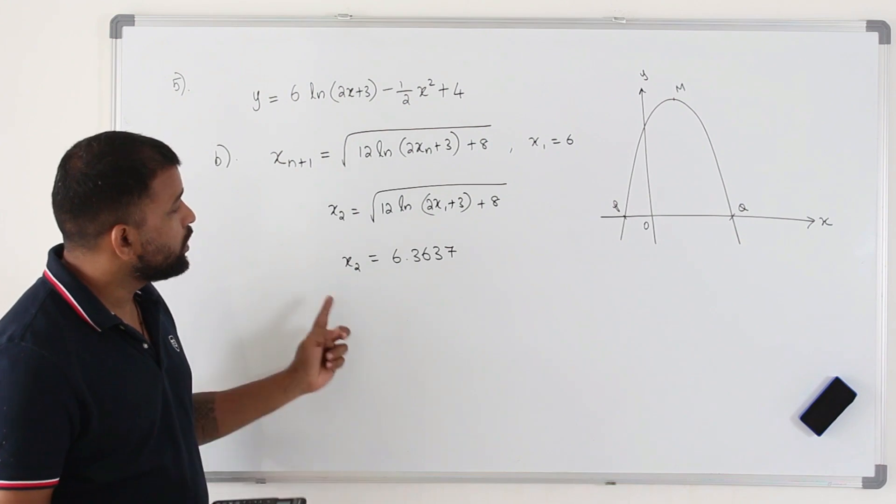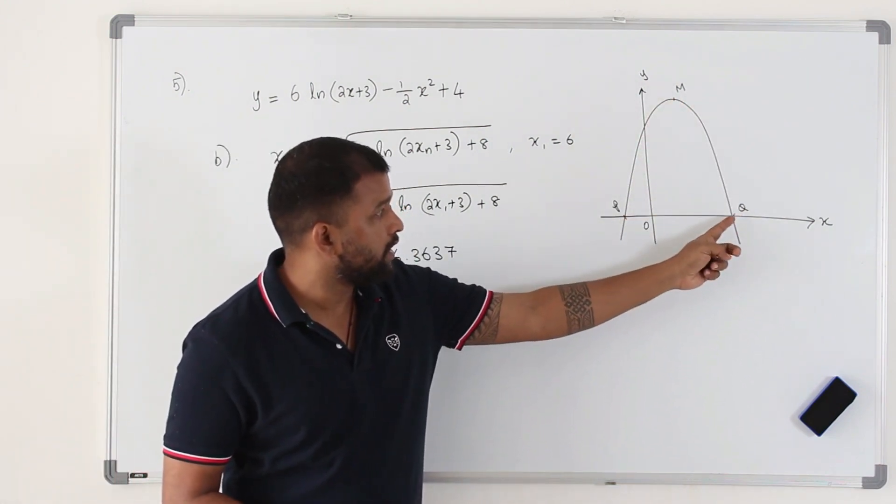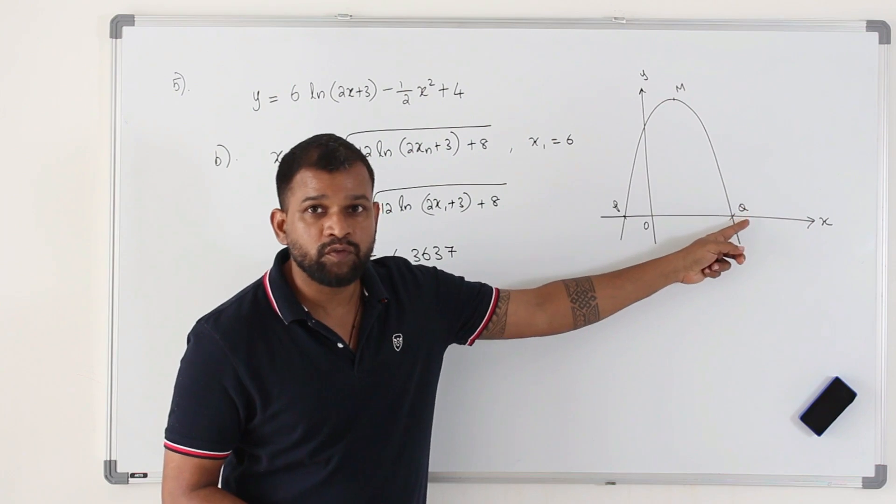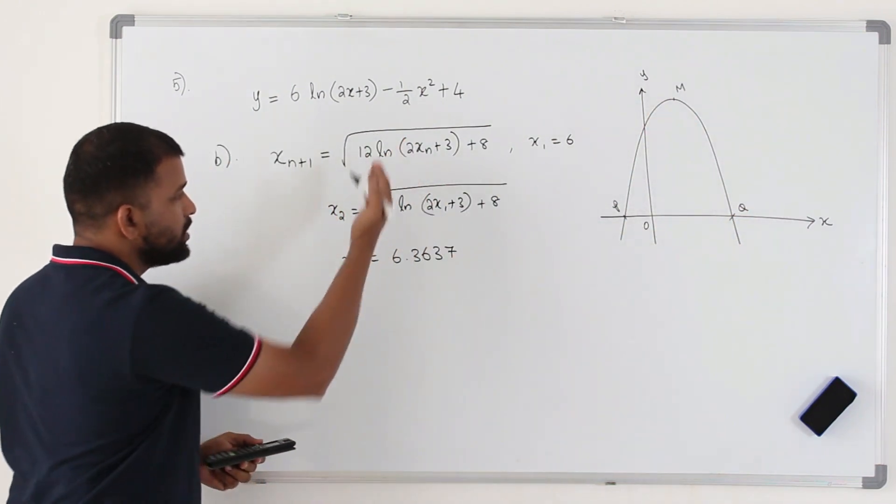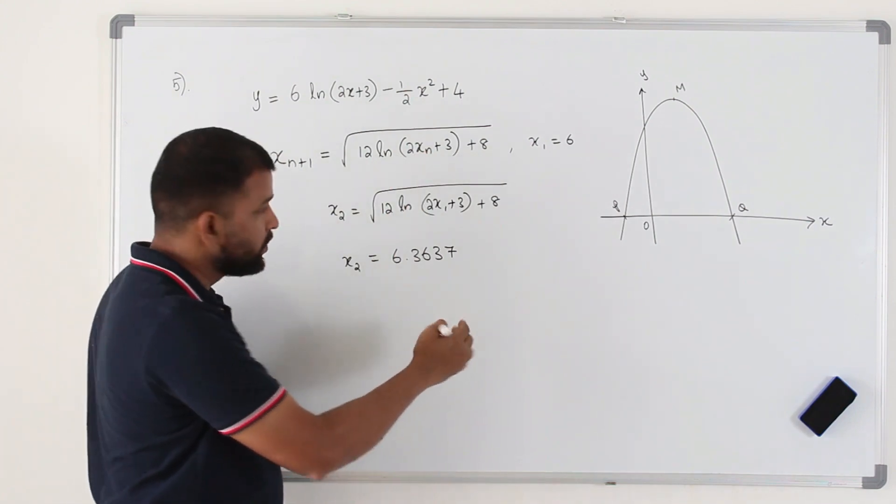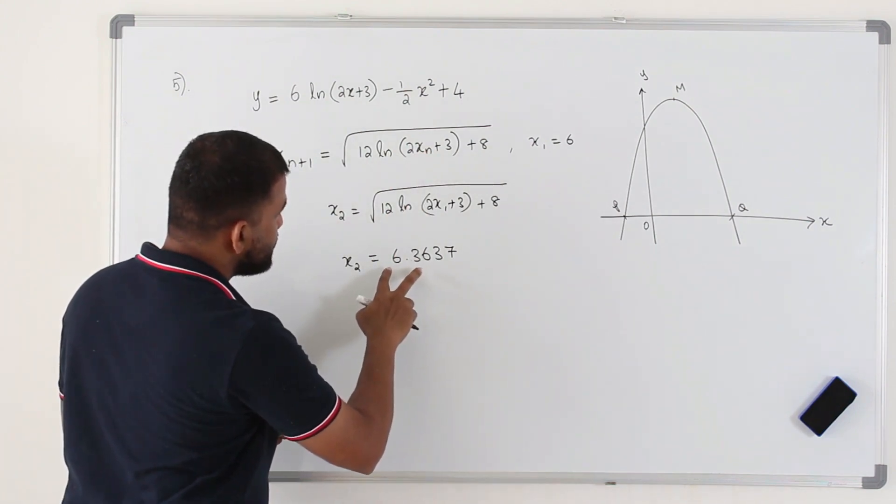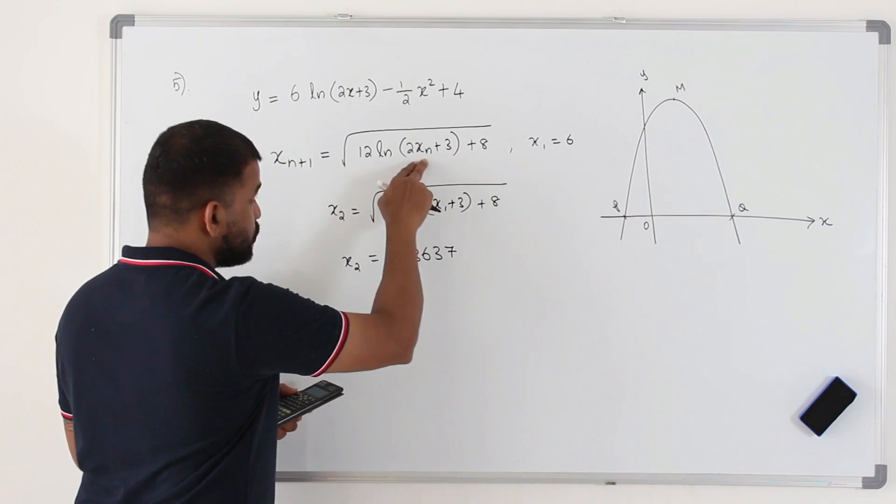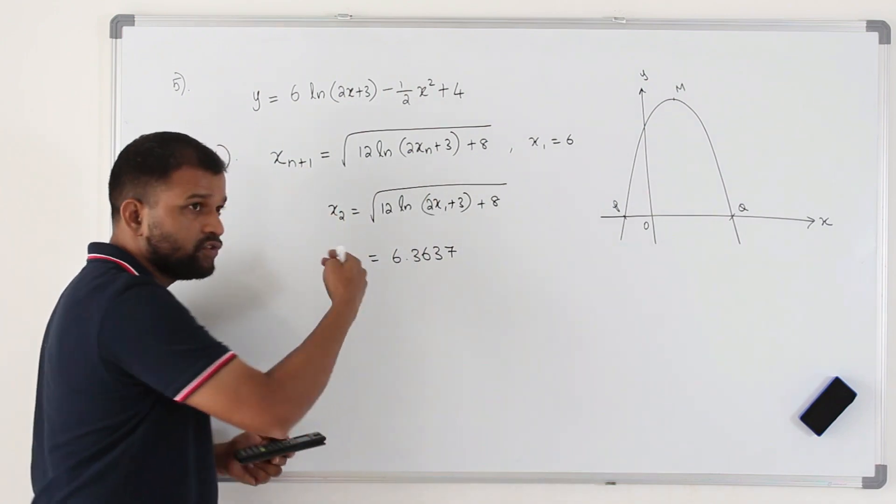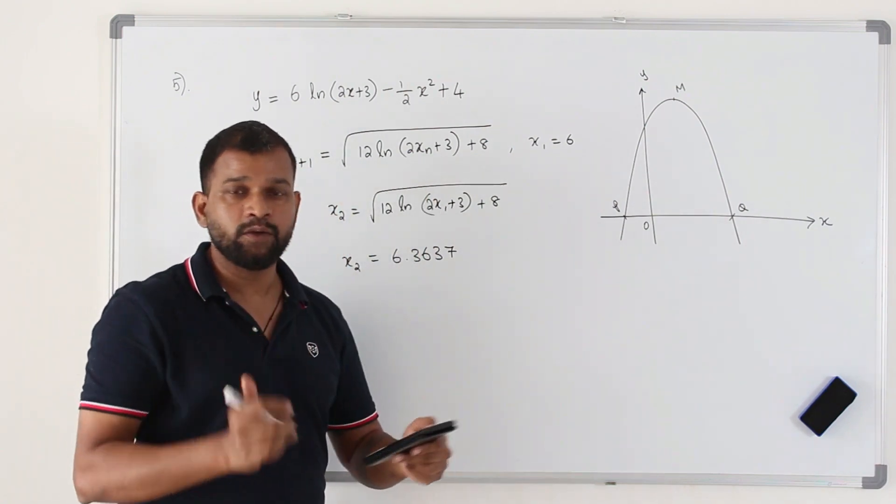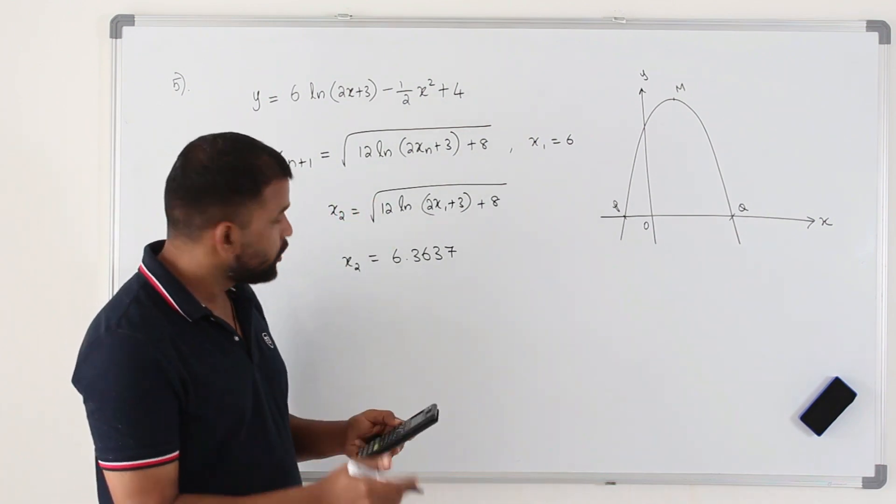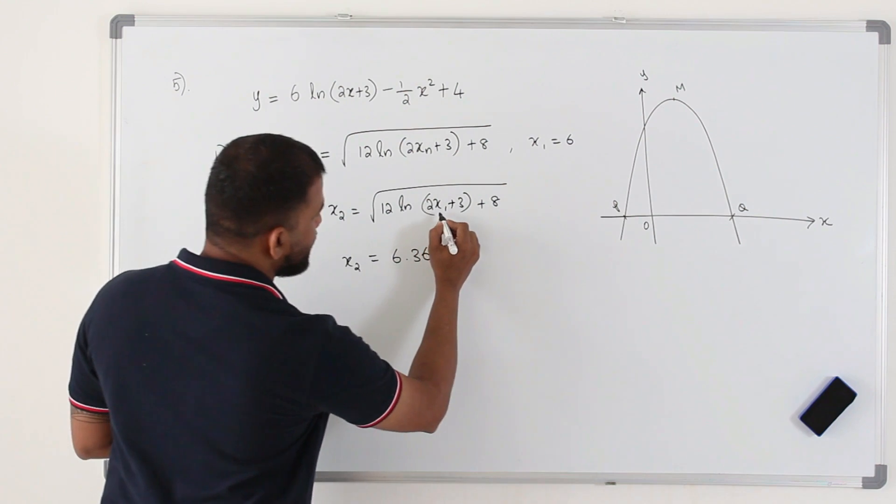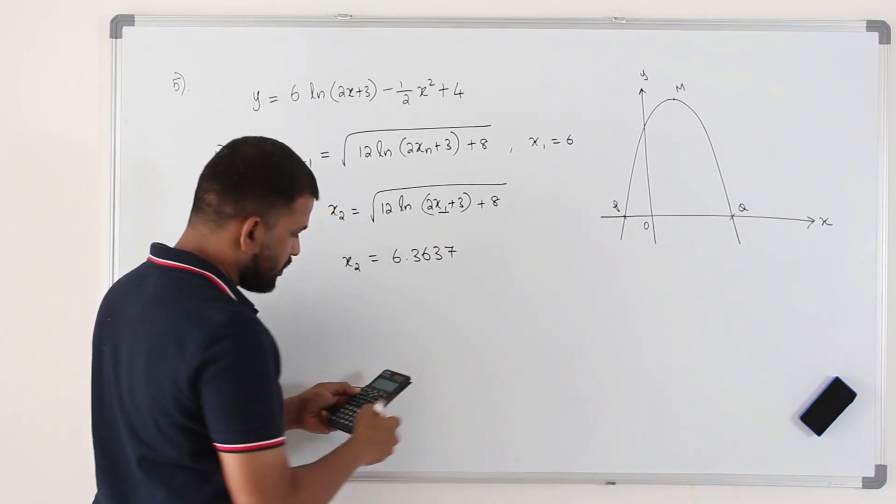And then they want you to find the solution to this function, the x-coordinate of Q, which is the root of this function to 4 decimal places. So we can use the same iterative formula. Now you need to replace x_n by x2 here and find x3. And you keep on finding the values till you get same 4 decimal places. In order to do that, what I'm going to do, I'm going to bring my cursor here in my calculator.